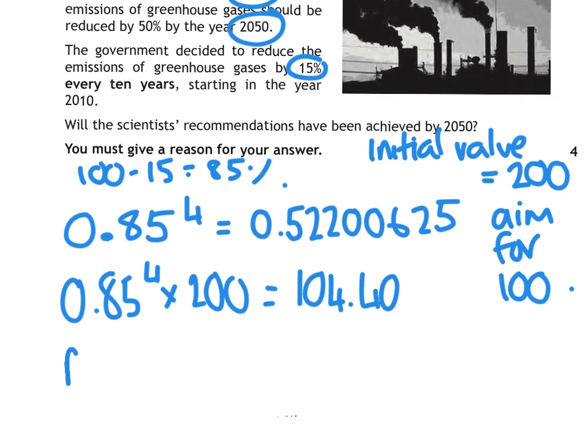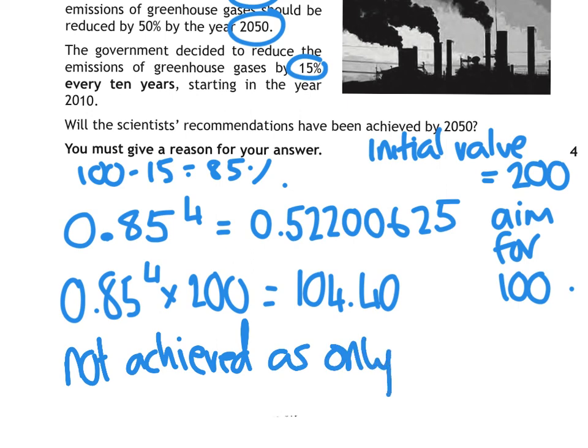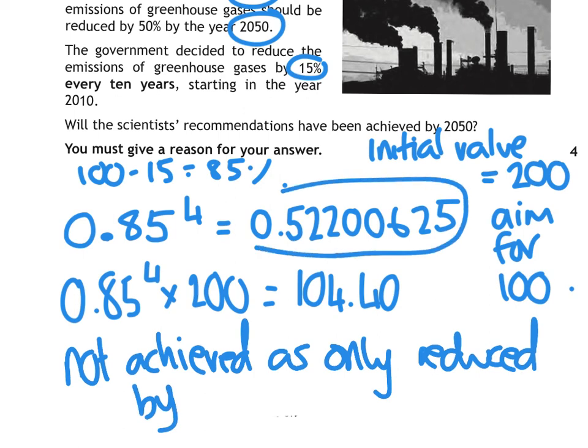So the conclusion is, will it have been achieved? So I'm going to say not achieved as it's only reduced by, remember this number here, that's technically 52.2%. That means that it's only been reduced by 47.8%. You could have also said that it's not quite made it to 50% because I've used the values 200, which meant I was aiming for 100 and we didn't get to 100. So you could have then said if this example, you could have said 104 was greater than 100, but you could have done a made up value, but you didn't technically have to. That was a stong question that year.